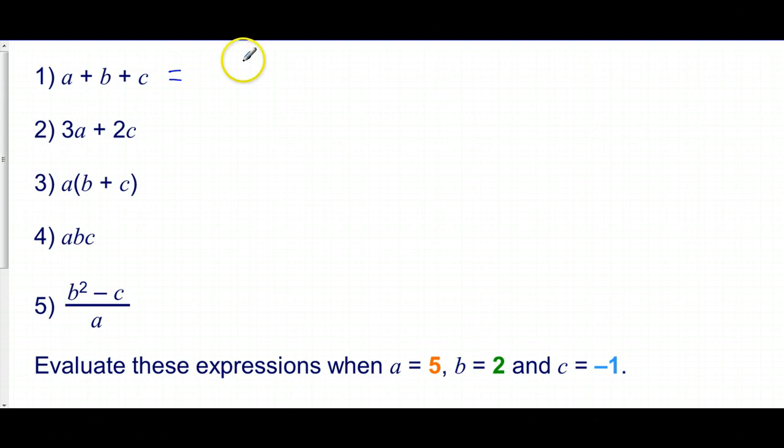Well, a is 5, so we've got to do 5 plus our b, which is 2, plus our c, which is minus 1. Now, if you need to remind yourself about your positive and negative numbers, there's a couple of videos about that. So this adds up, so 5 plus 2 plus minus 1 gives us 7, and then we're going down, it's like a sandbag, so it goes down to 6.